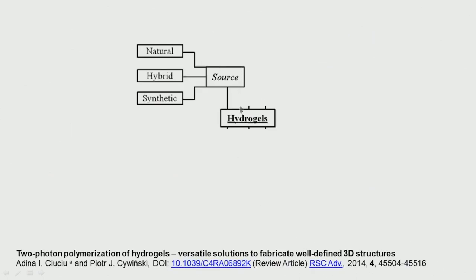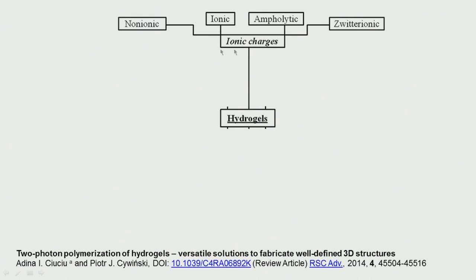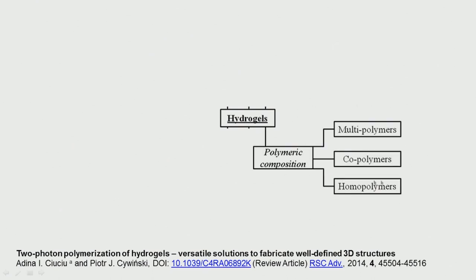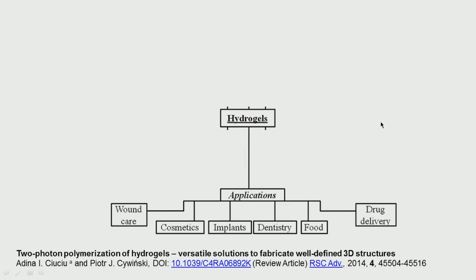The source of hydrogels can be natural, synthetic, or a hybrid combination of both. Based on ionic character, we can have non-ionic hydrogels, ionic hydrogels, ampholytic hydrogels — a combination of both — or zwitterionic hydrogels. Based on cross-linking, we can have physical or chemical cross-linking. Based on polymeric composition, we can have homopolymers — where only one monomer is used — co-polymers with more than one monomer, or multi-polymers with many polymers. Applications include wound dressing, cosmetics, implants, dentistry, food, and drug delivery.